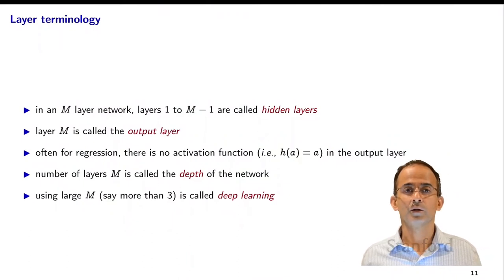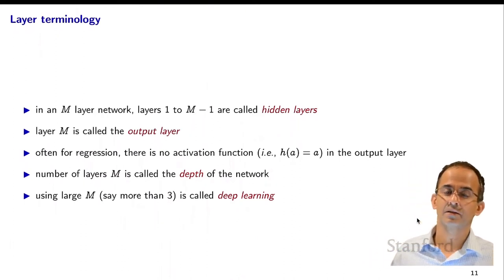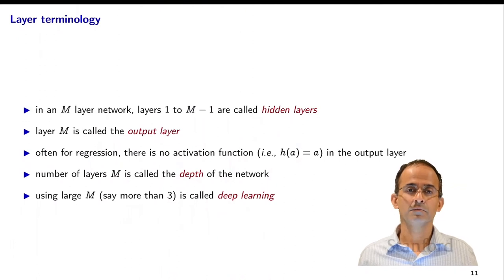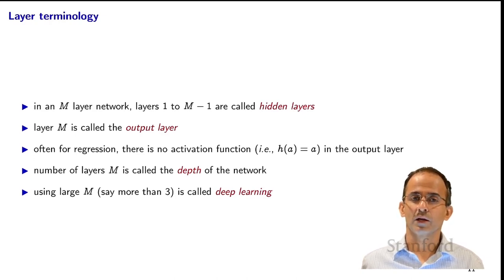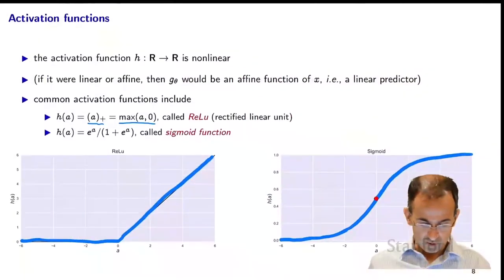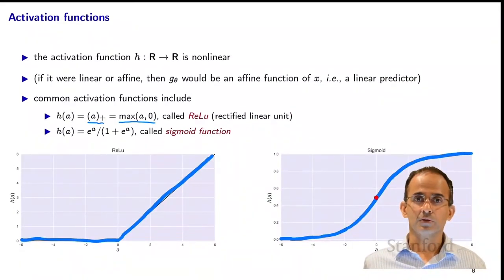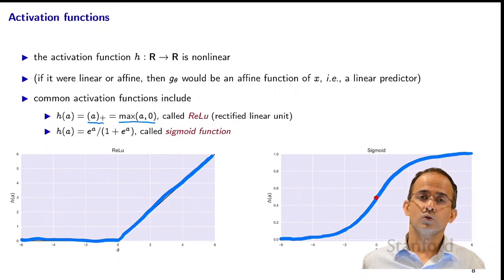There is certain terminology commonly used for neural networks. If you have an M-layer network, layers 1 through M-1 are called hidden layers, and layer M is called the output layer. Very often, if you're doing regression, you do not use an activation function on the output layer — or more specifically, you use the identity activation function, H of A is A. In the case of regression, you can see why: if the output layer used, say, the sigmoid activation function, it would only be able to generate predictions between 0 and 1, which wouldn't work for y values outside that range.